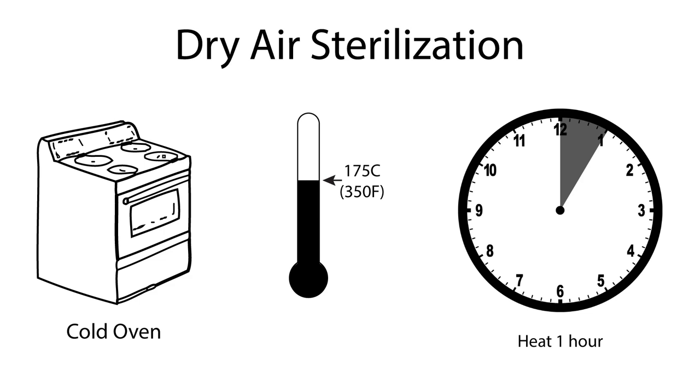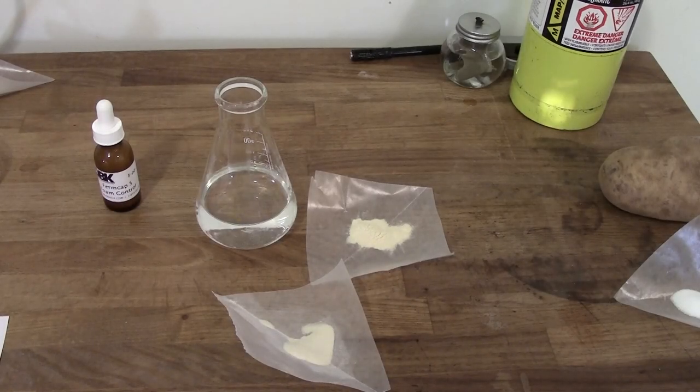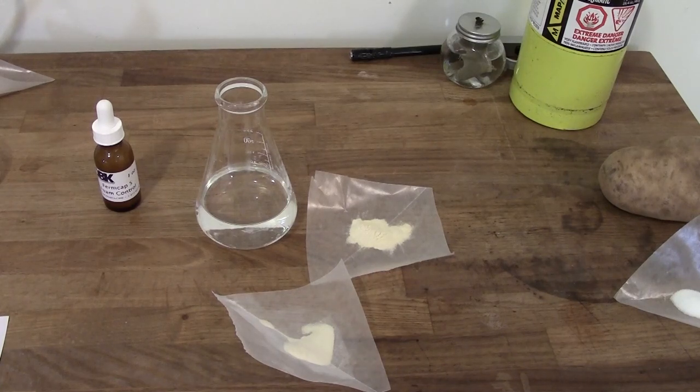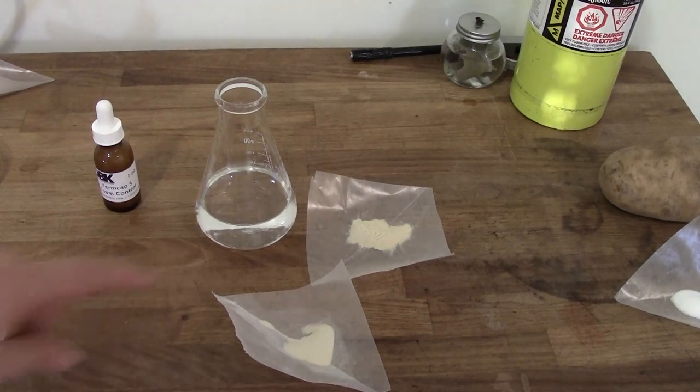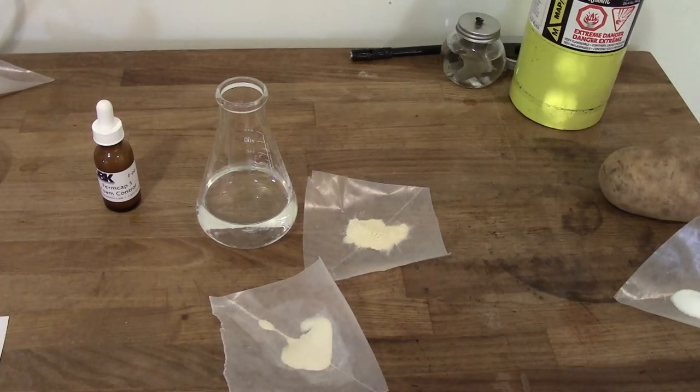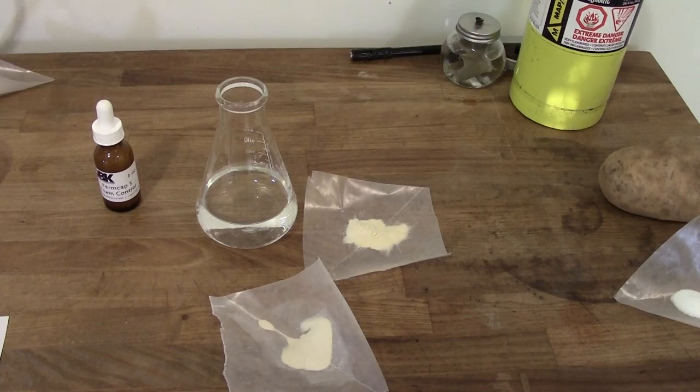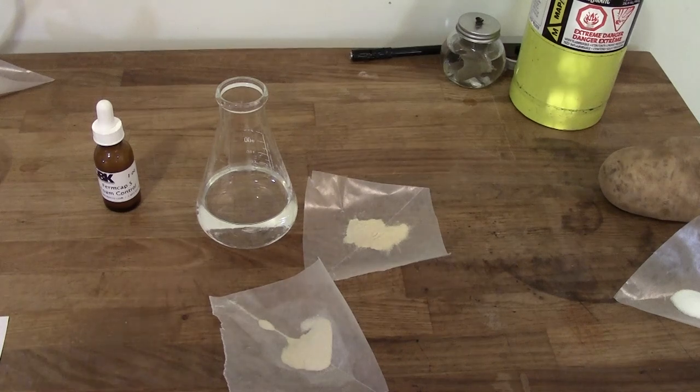The first medium I'm going to show you how to make is wort agar, which as the name suggests is just solidified wort. Now we could start with maybe some wort we prepared for a starter or pulled off of a beer. But today I'm just going to show you how to do this from dry malt extract as well as obviously powdered agar. If you go to the blog post that accompanies this video, I'll have instructions for how to do this from wort. So what we need is wort that's fairly dilute. We only want it to be between 1.002 and 1.006.